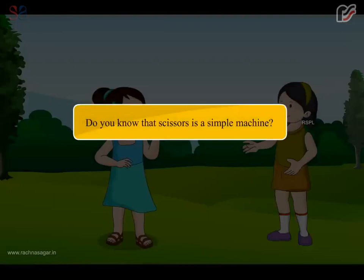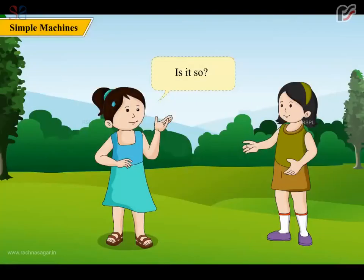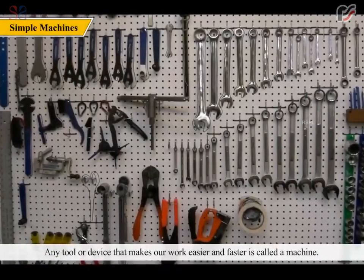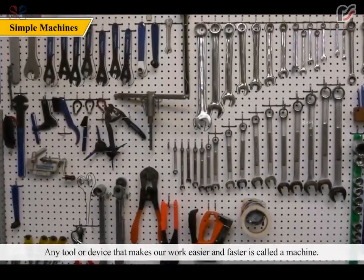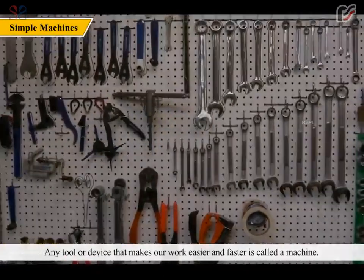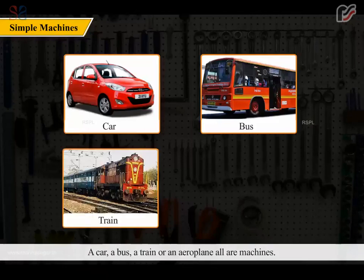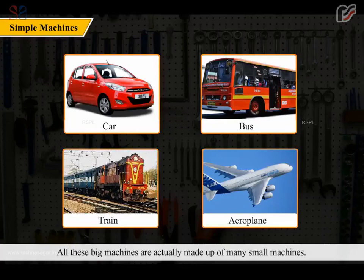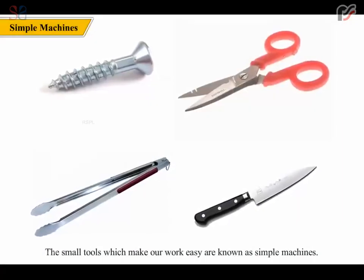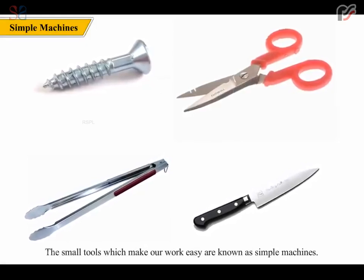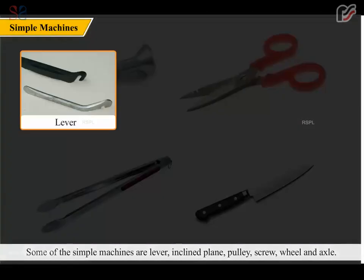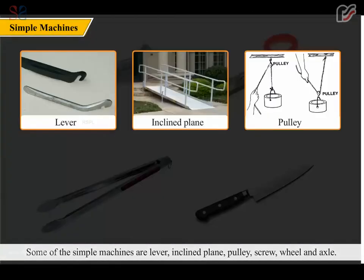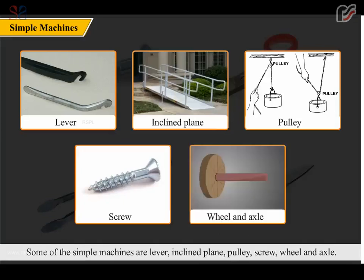Do you know that scissors is a simple machine? Yes, dear. Any tool or device that makes our work easier and faster is called a machine. A car, a bus, a train or an aeroplane — all are machines. All these big machines are actually made up of many small machines. Some of the simple machines are lever, inclined plane, pulley, screw, and wheel and axle. Let us see how these machines help us.